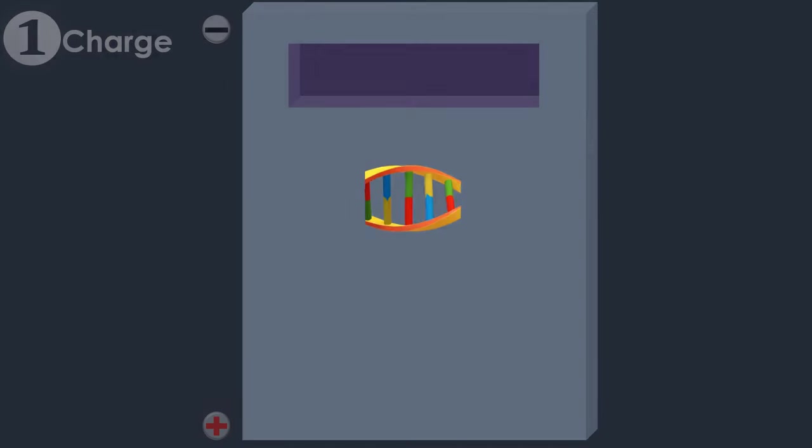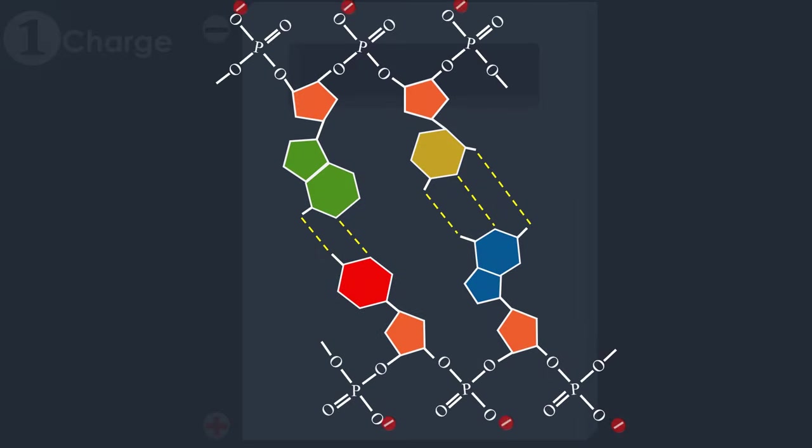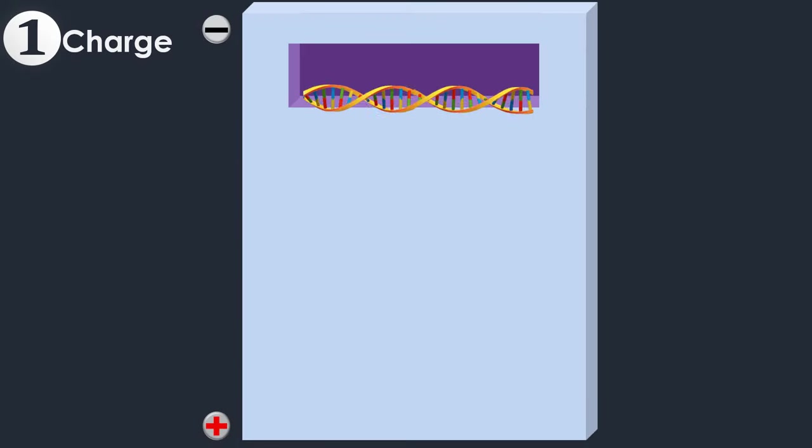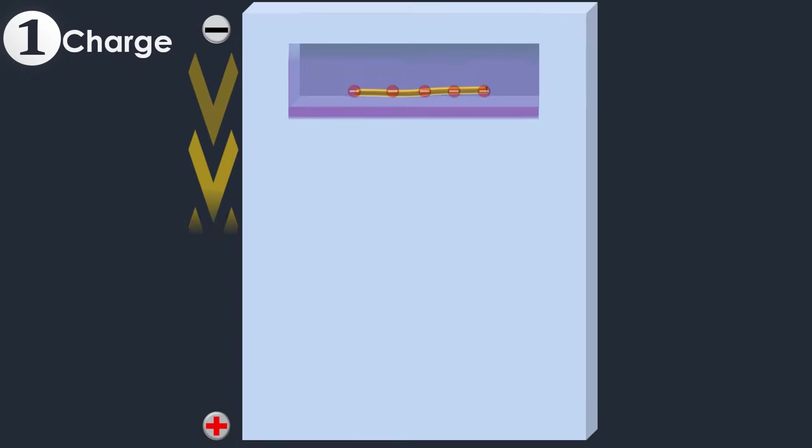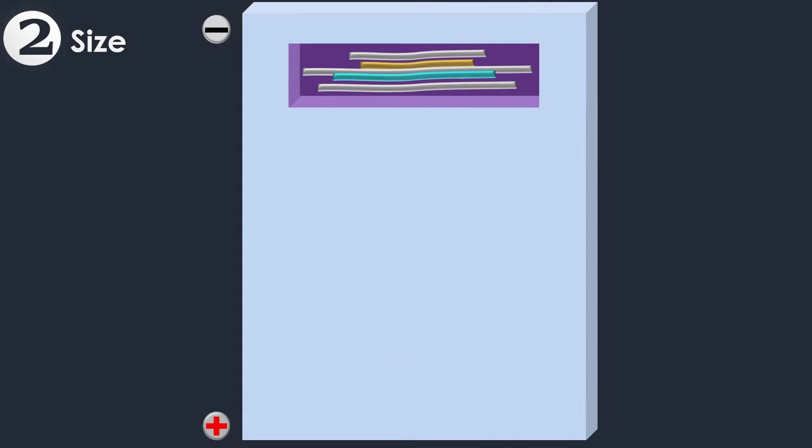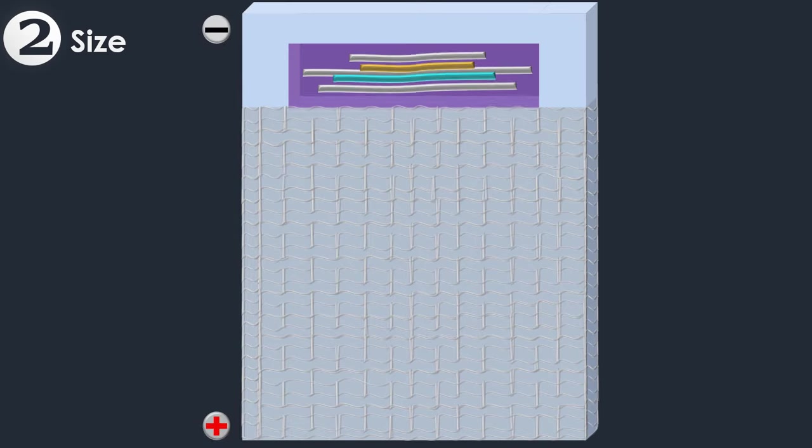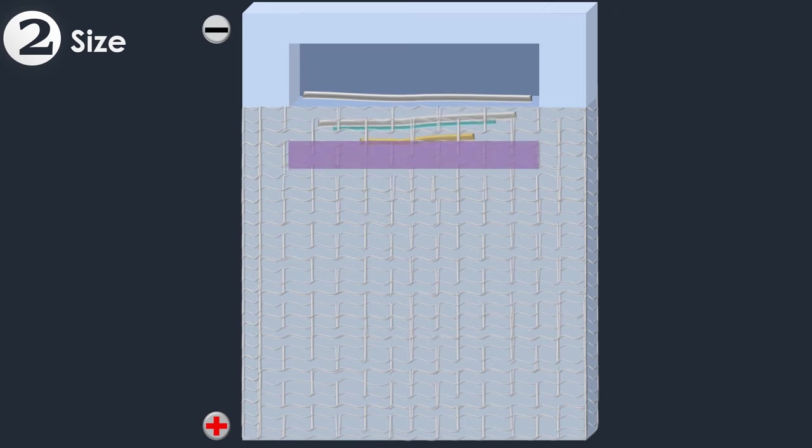The phosphate backbone of the DNA molecule is negatively charged. Therefore, when placed in an electric field, DNA fragments will migrate to the positively charged anode. Because all DNA fragments have the same amount of charge per mass, small fragments move through the gel faster than large ones.